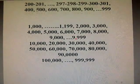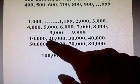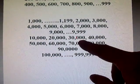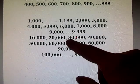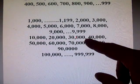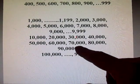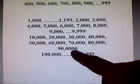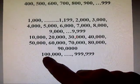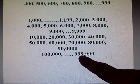So we count all the way up to 9,999, then it's 10,000. Then we have 10,001 all the way up to 20,000, 30,000, all the way up to 39,999. Then it becomes 40,000, 50,000, 60,000, 70,000, 80,000, 90,000. And then 100,000, and then we count all the way up to 999,999.